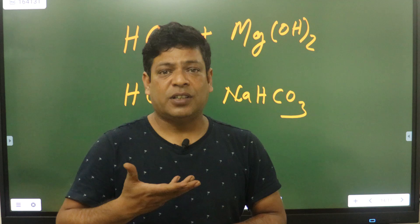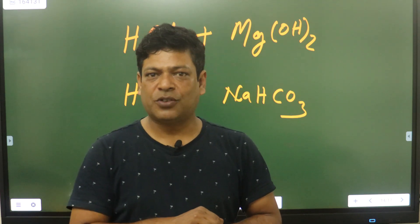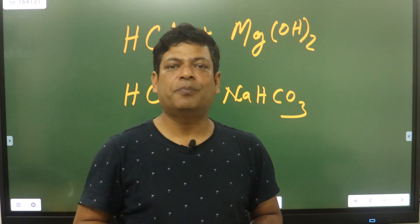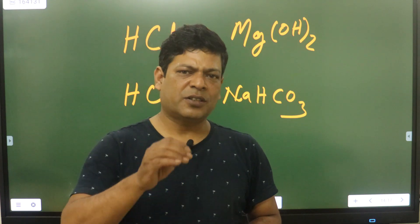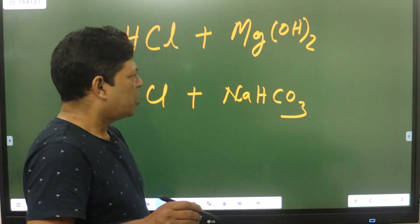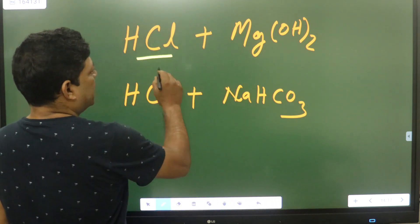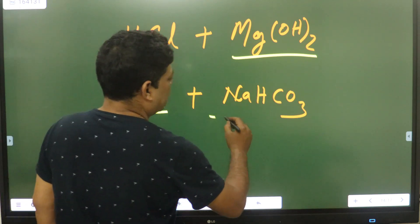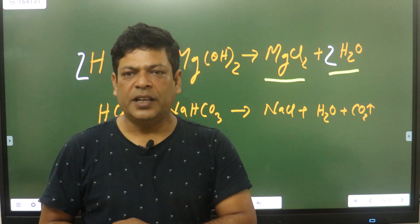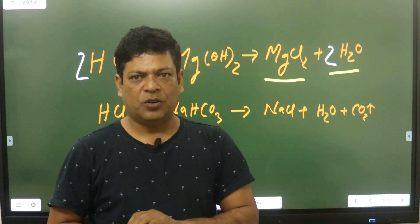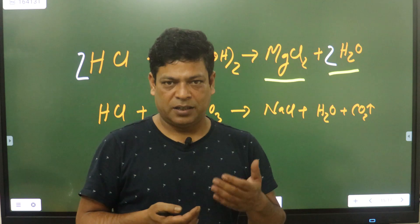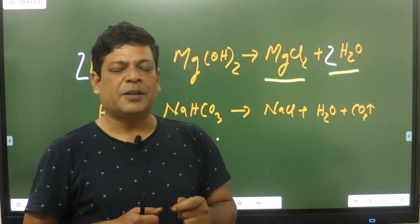In our body, by default acid is produced, and if we consume food that is acidic, the acid amount increases. So to neutralize it, we use a base. The base we use includes milk of magnesia — magnesium hydroxide — and sodium bicarbonate. These react with the acid through double displacement reaction, forming salt and water, making us feel healthy and recovering from acidity.